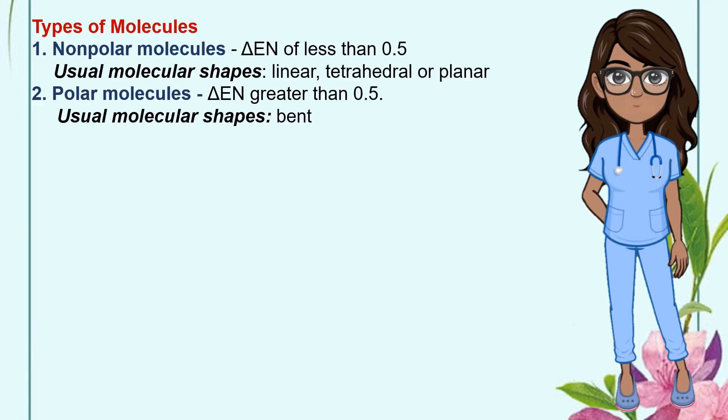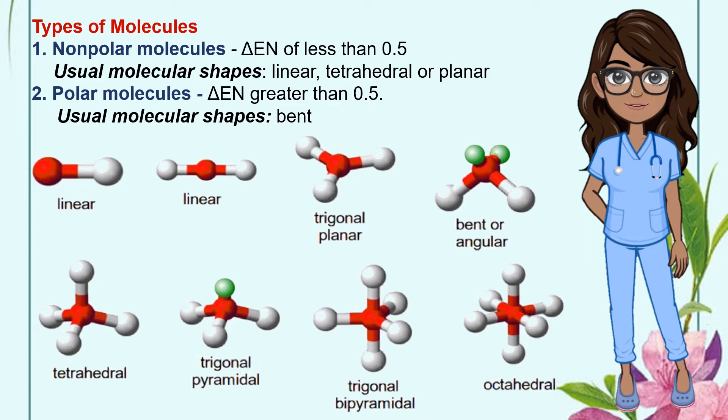Non-polar molecules have an electronegativity difference of less than 0.5. It is symmetrical having usual molecular shapes of linear, tetrahedral, or planar. Polar molecules have an electronegativity difference of greater than 0.5. It is asymmetrical having usual molecular shapes of bent. However, there is a possibility that the bond is non-polar based on electronegativity difference but the molecule as a whole is polar based on its molecular shape.